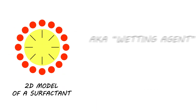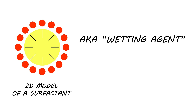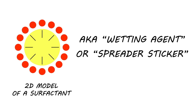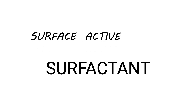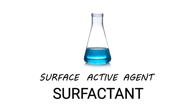A surfactant, also known as a wetting agent or spreader sticker, is a chemical that breaks up the surface tension of a liquid. The term surfactant comes from the larger phrase 'surface active agent,' a compound that is soluble in chemical solutions or water and allows mixtures to blend, adhere, and work better.